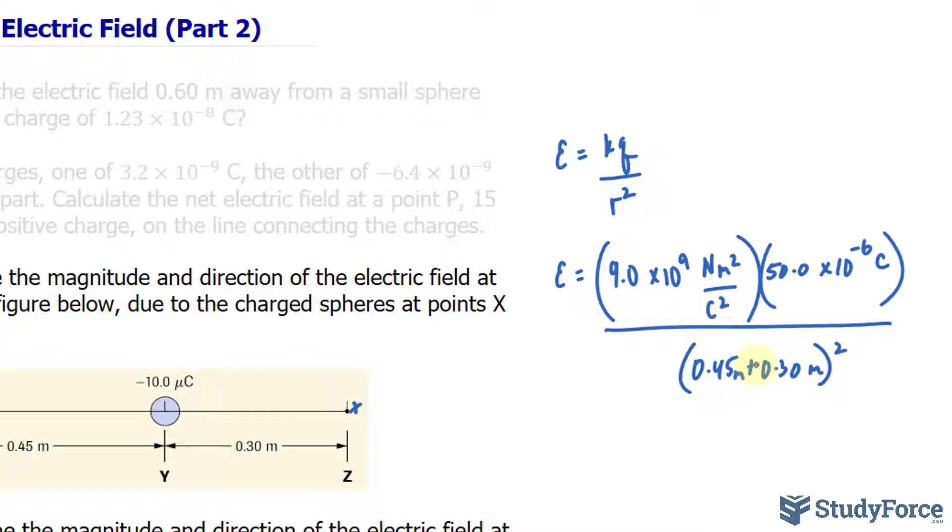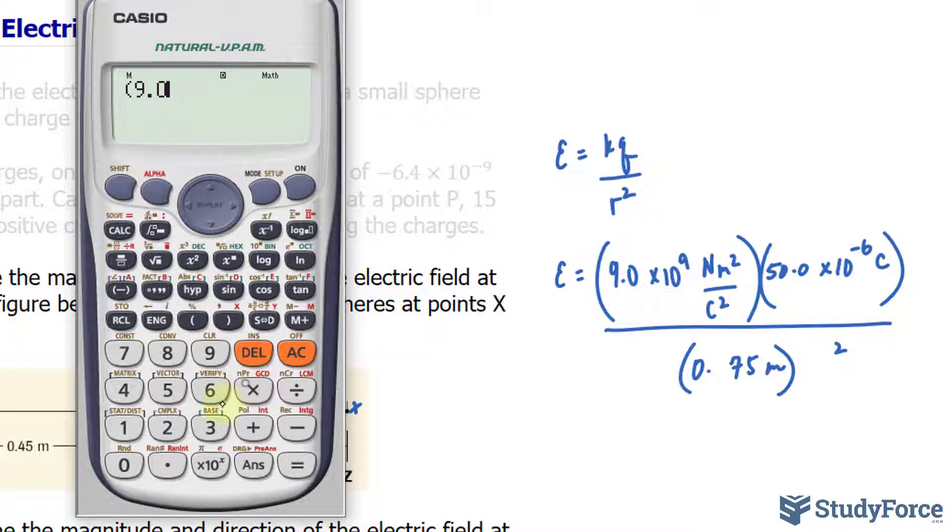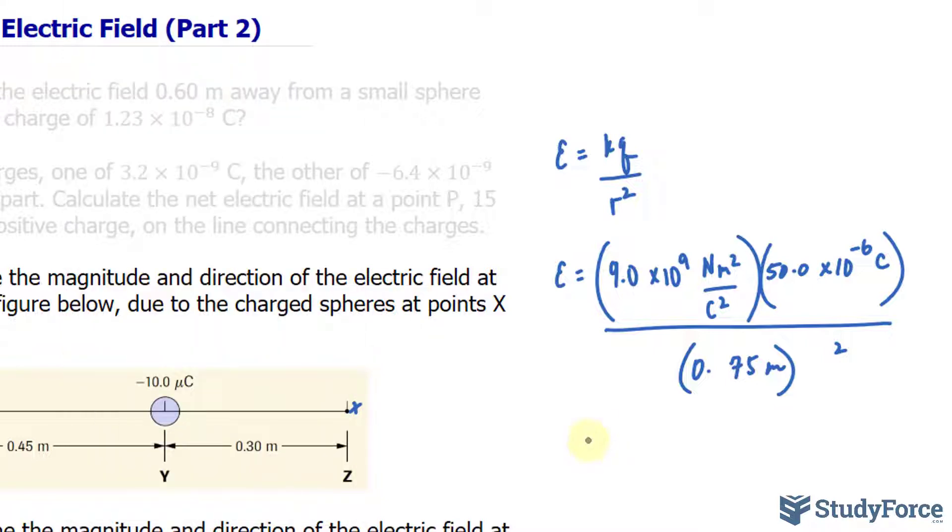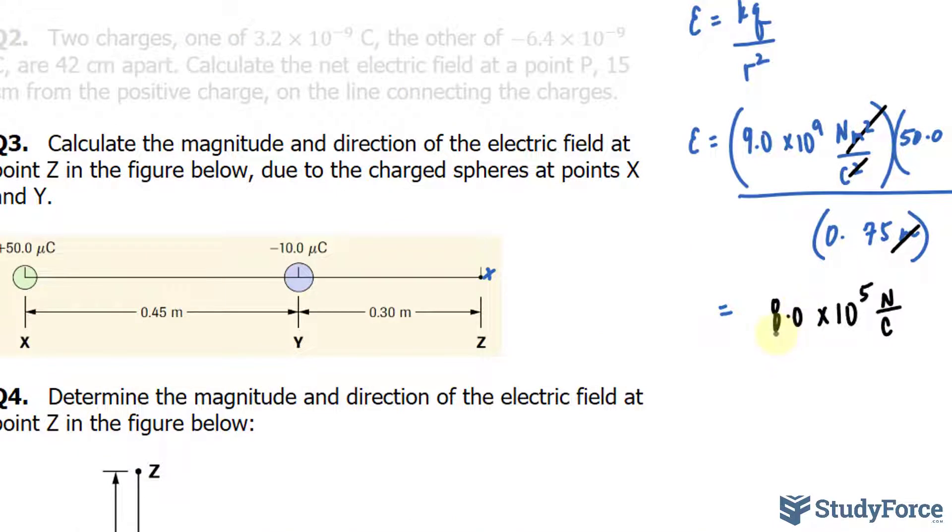And that's being raised to the power of 2. So together, when you sum that up, you should end up with 0.75. Now let's use our calculator. 9.0 times 10 to the power of 9, that gets multiplied to 50.0 times 10 to the power of negative 6. I'm doing this all in one step, so I'll divide that now by 0.75, and that's being squared. So we end up getting 800,000. And the units will end up becoming, notice how meters squared will cancel out with this one. The coulombs will cancel out with one of these. We get 8.0 times 10 to the power of 5 newtons per coulomb. That right there represents the electric field. And again, it's a repulsion because they're both positive. So expect it to go this way at that magnitude.